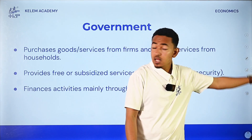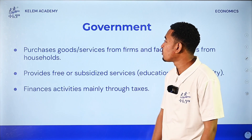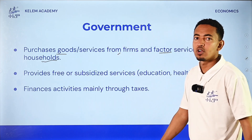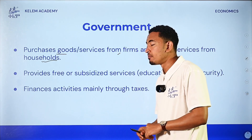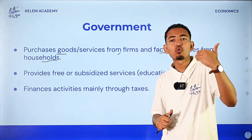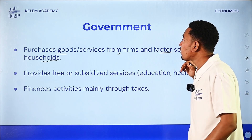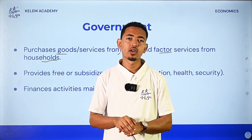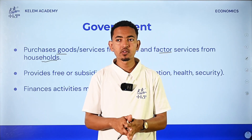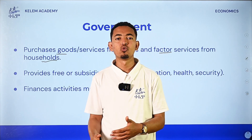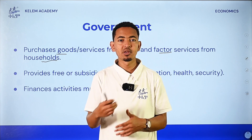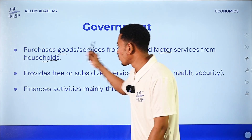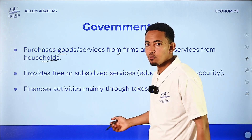The third decision-making unit is the government. The government purchases goods and services from firms and acquires factor services from households. The government operates in both the private and public sector.